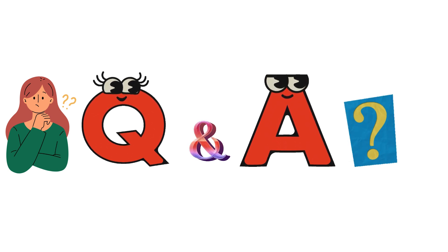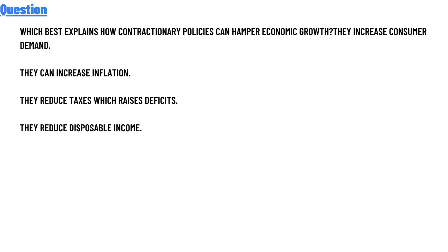Our today's question is: which best explains how contractionary policies can hamper economic growth? Option A: They increase consumer demand. Option B: They can increase inflation. Option C: They reduce taxes which raise deficiencies. Option D: They reduce disposable income.